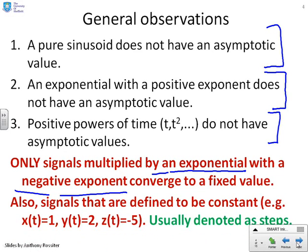There is one other class of signals we didn't have on the previous slide: signals defined to be constant. Some examples: x(t) = 1, y(t) = 2, z(t) = −5. These are usually denoted as steps. This means we've now got two classes of signals with asymptotic values: exponentials with negative exponents or signals multiplied by that, or signals which are just a constant.